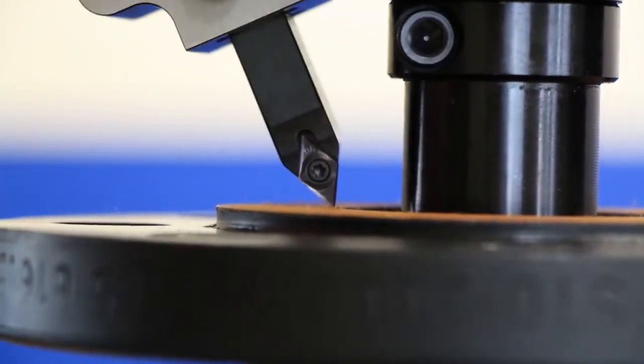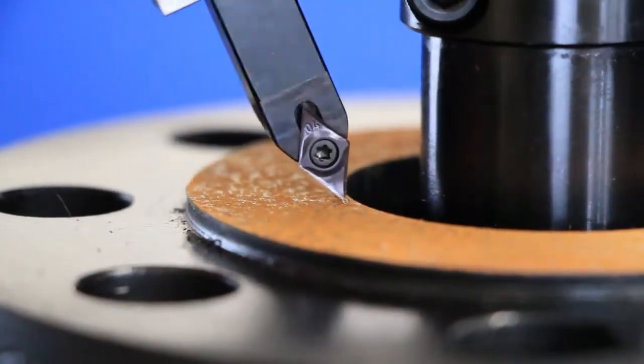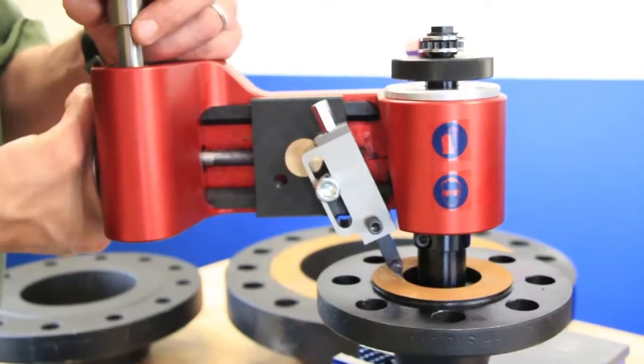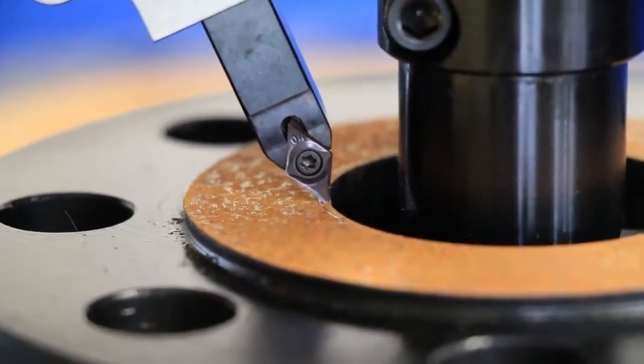To set the depth of the insert, advance the insert holder and rotate the tool back and forth until the insert barely scratches the surface of the flange. Once a small scratch is visible,